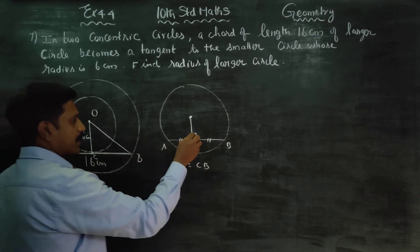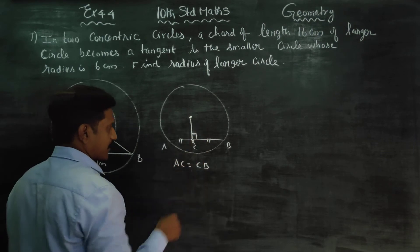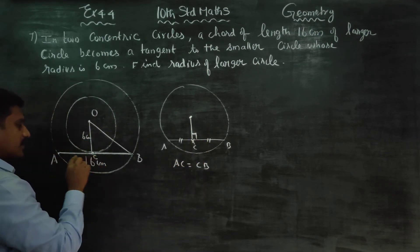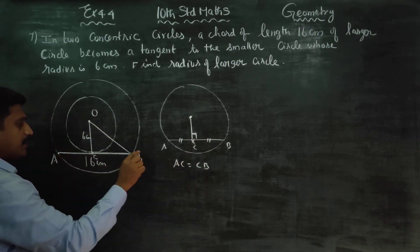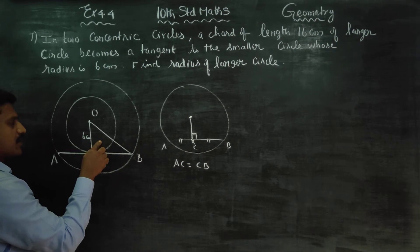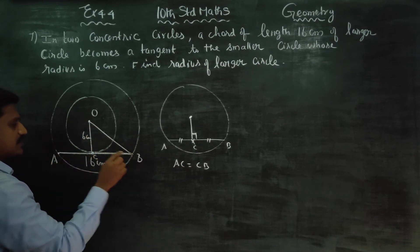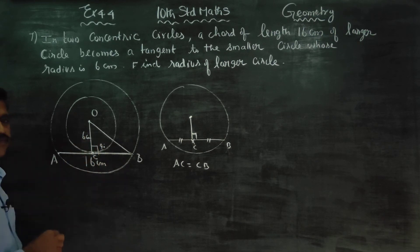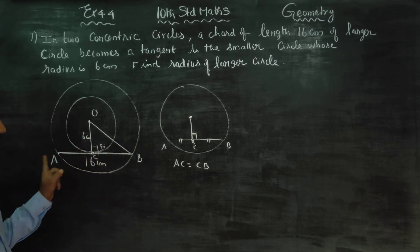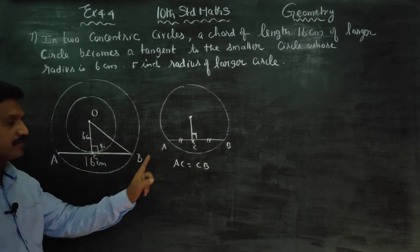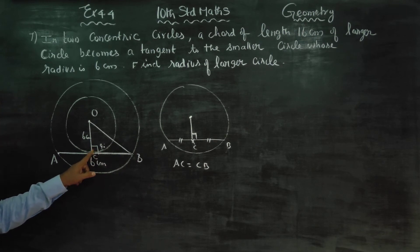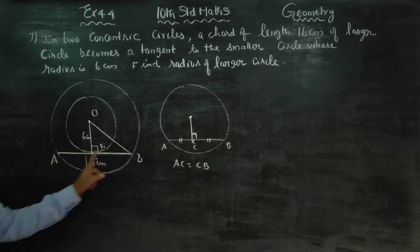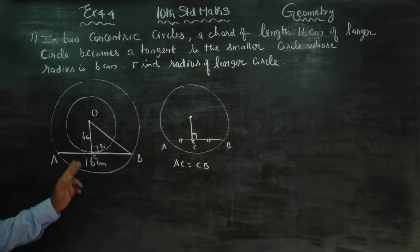AB is a tangent. Always, the radius is perpendicular to the tangent — that is, the angle between the radius and the tangent is 90 degrees. Always, the radius is perpendicular to the tangent. That is the concept.